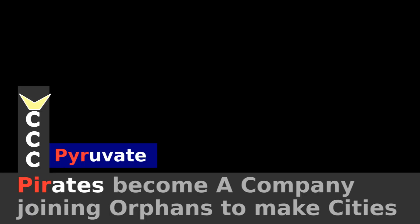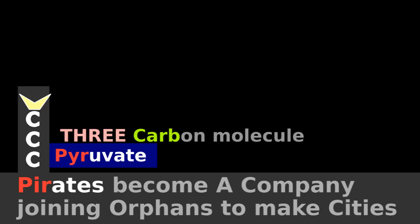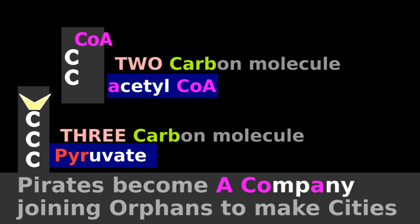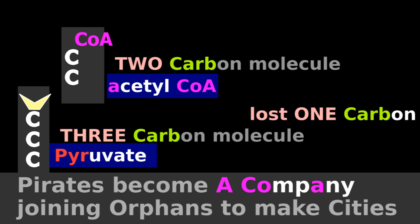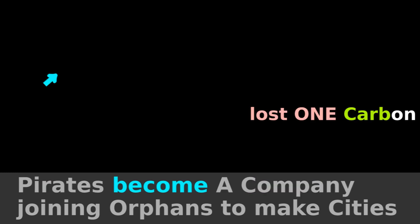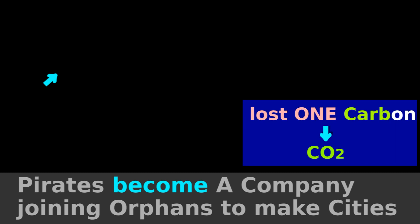Pyruvate is a 3-carbon molecule, and acetyl-CoA is a 2-carbon molecule, so you lost 1 carbon going from pyruvate to acetyl-CoA, and that lost carbon becomes carbon dioxide.